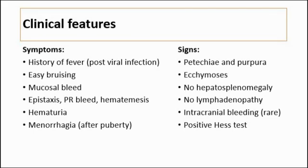Hematuria may also be a presentation, where there is blood seen in the urine. For girls — especially those after puberty — they might have menorrhagia. Signs of ITP include petechiae and purpura, as well as ecchymosis, which means superficial bruising.